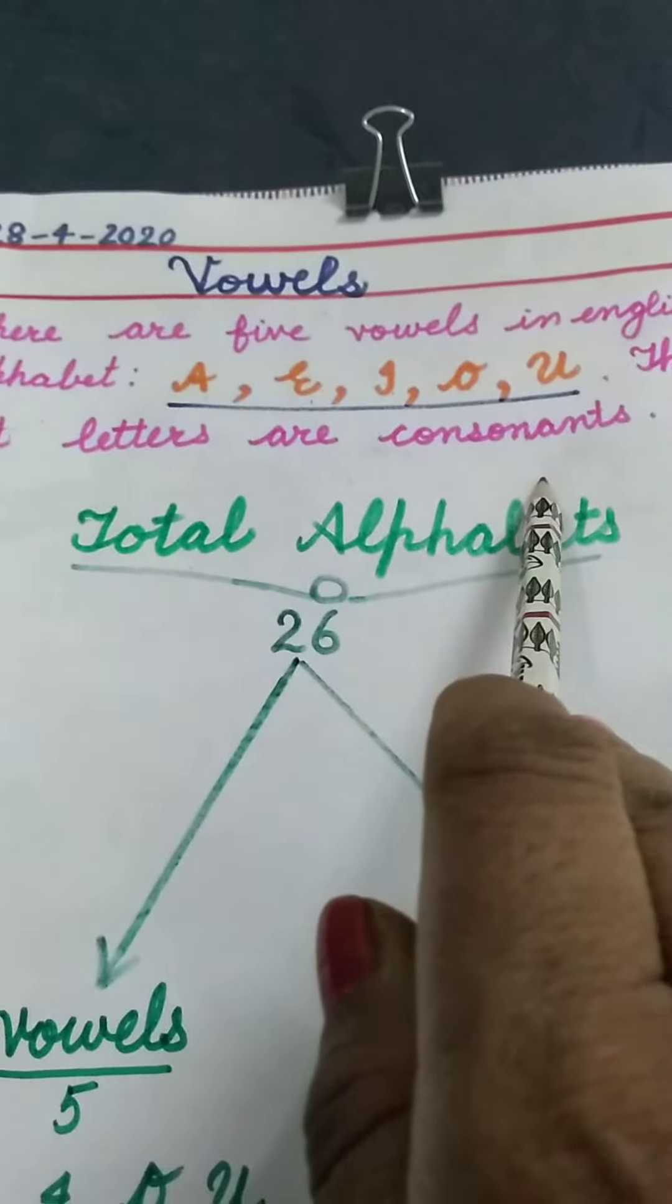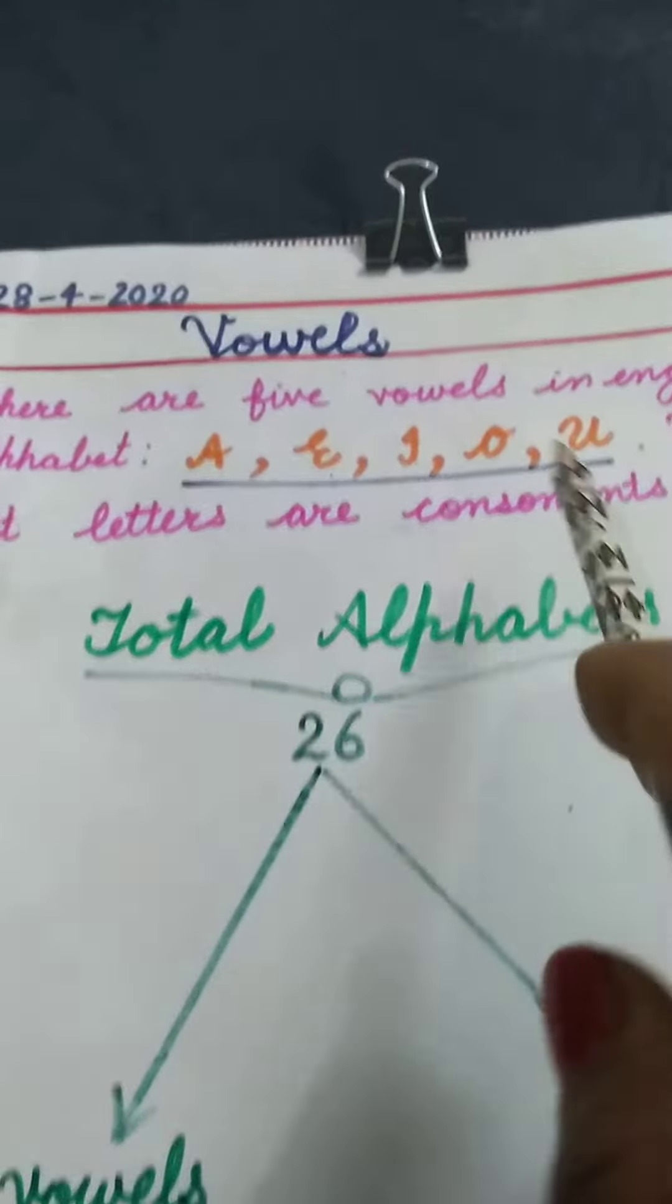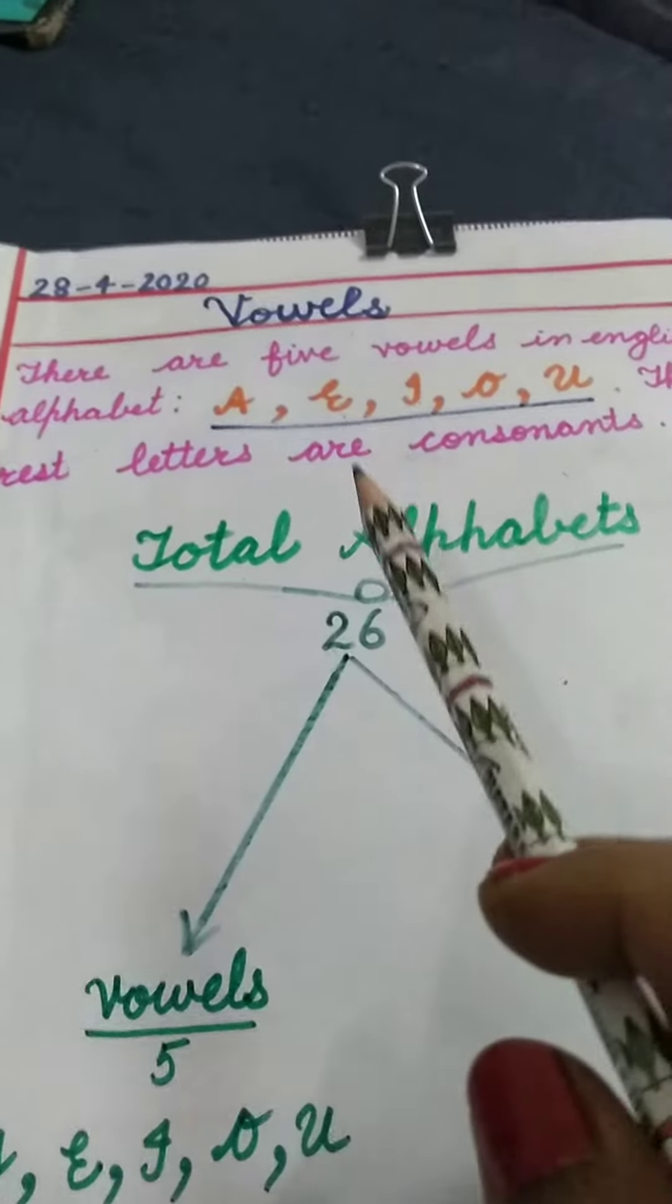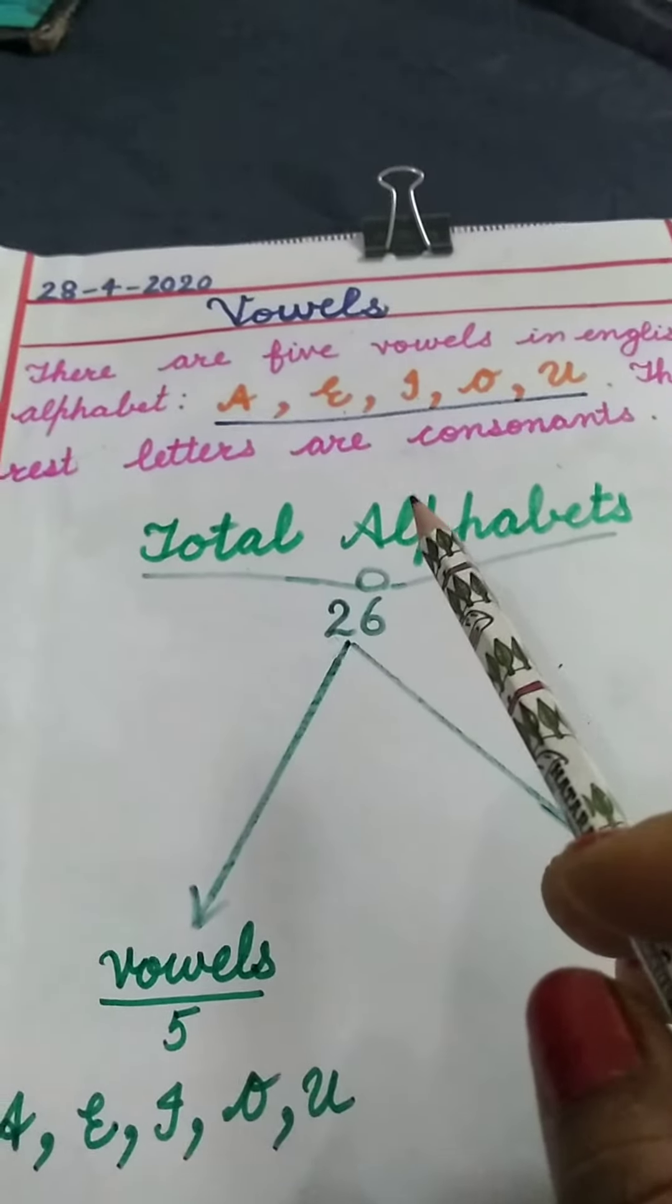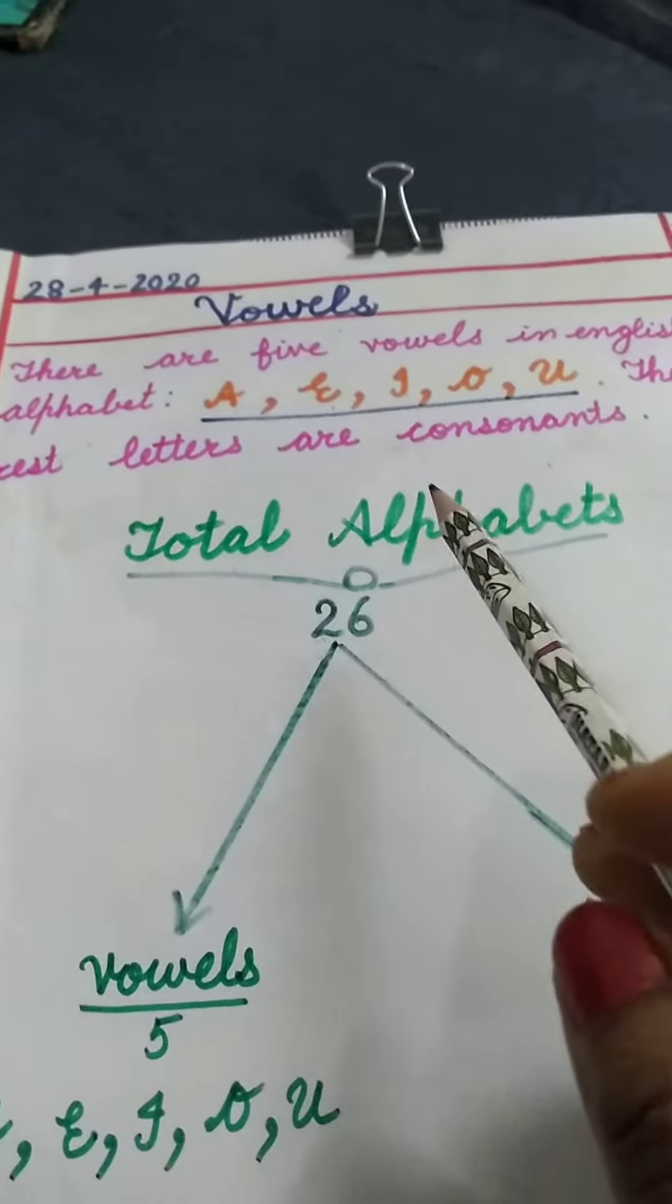Students, as you know the English alphabet... Today you need to understand vowels. Total alphabets: 26, from A to Z. Out of these 26 alphabets, five letters—A, E, I, O, U—are vowels.